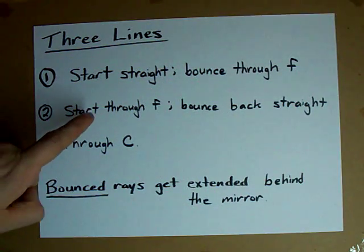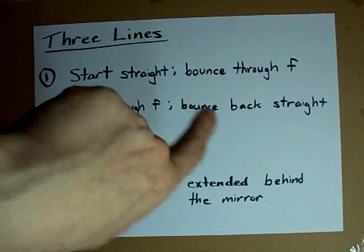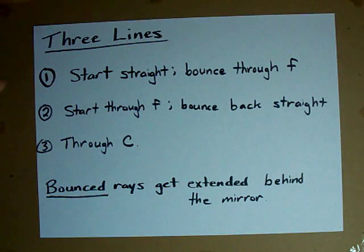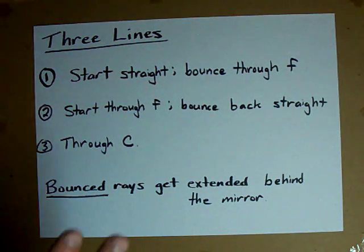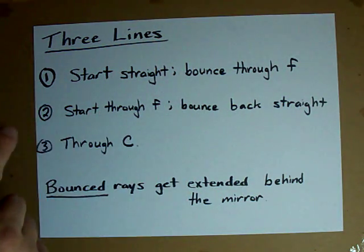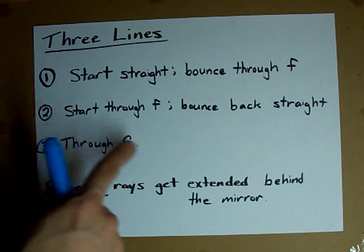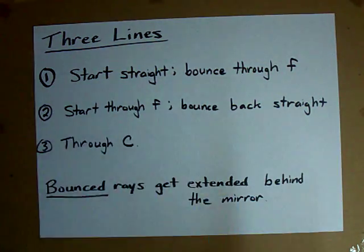The second line, I want you to start out going through F, and when it bounces off the mirror, it's going to bounce back straight. The third one, I just want you to draw a line between C and the pencil tip and extend it in both directions.